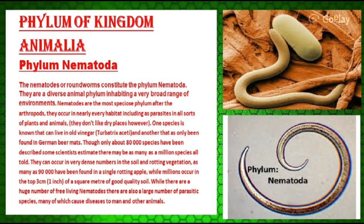Though only about 800 species have been described, some scientists estimate that there may be as many as a million species in total. They can occur in very dense numbers in the soil and rotting vegetation — as many as 90,000 have been found in a single rotting apple, while millions occur in the top 3 cm (1 inch) of a square meter of good quality soil. There are a huge number of free-living nematodes, but also a large number of parasitic species, many of which cause diseases to humans and other animals.